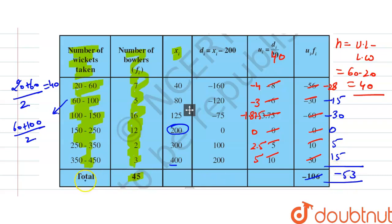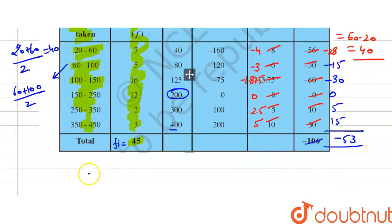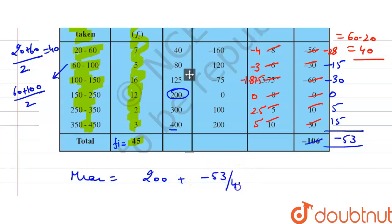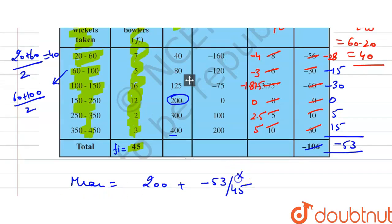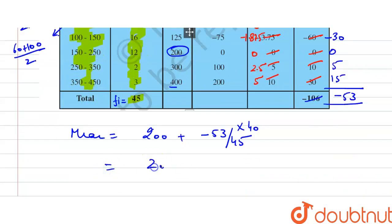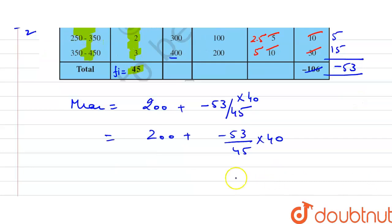Now applying the formula: mean = assumed mean + (summation of fi×ui / summation of fi) × h = 200 + (−53/45) × 40. Simplifying: 200 + (−53 × 40)/45 = 200 − 47.11 ≈ 152.89.